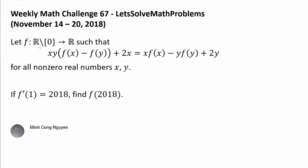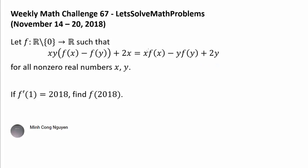Let f be a function from the set of non-zero real numbers to the set of real numbers such that xy times the quantity f(x) minus f(y) plus 2x is equal to x times f(x) minus y times f(y) plus 2y.